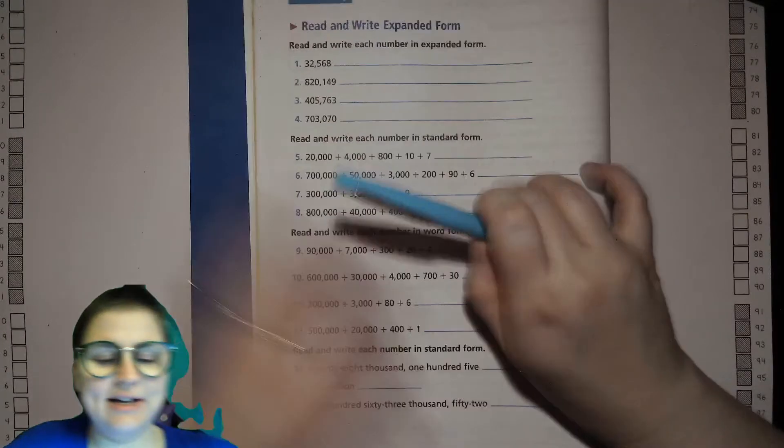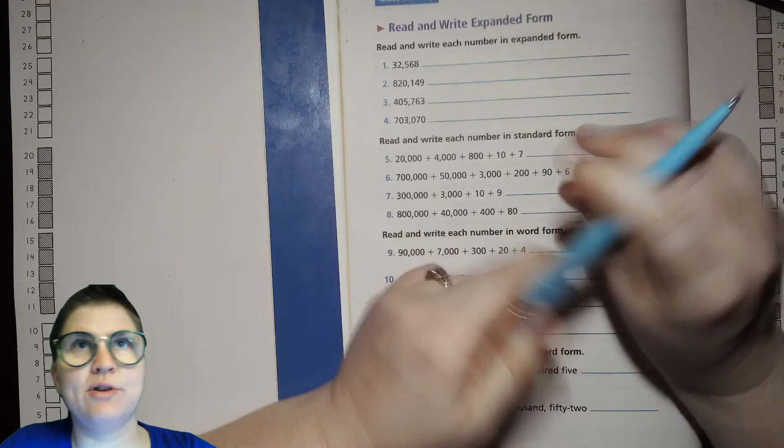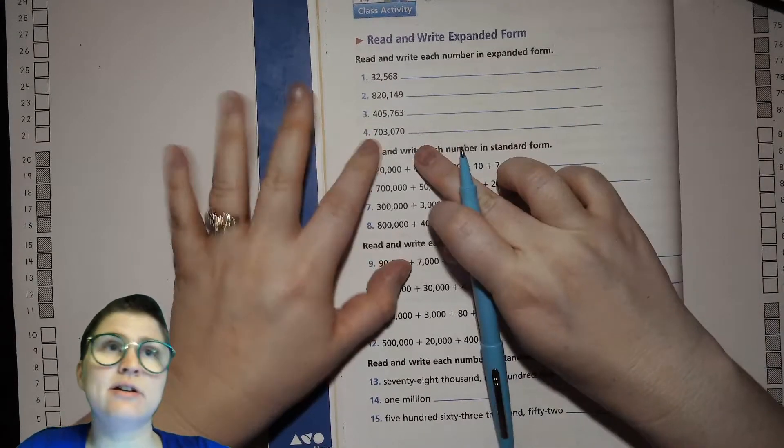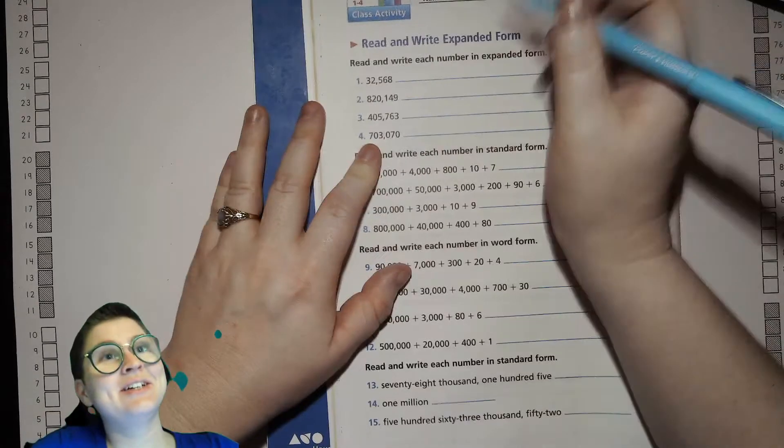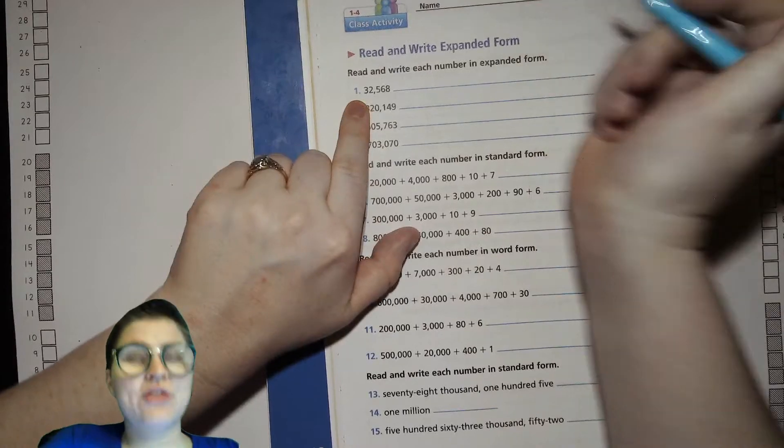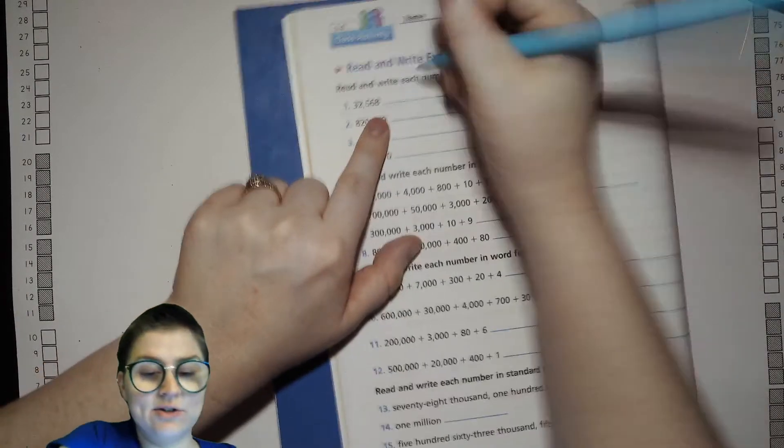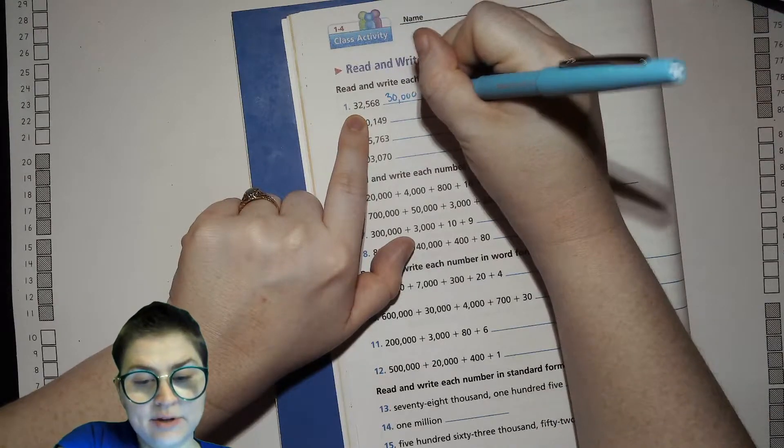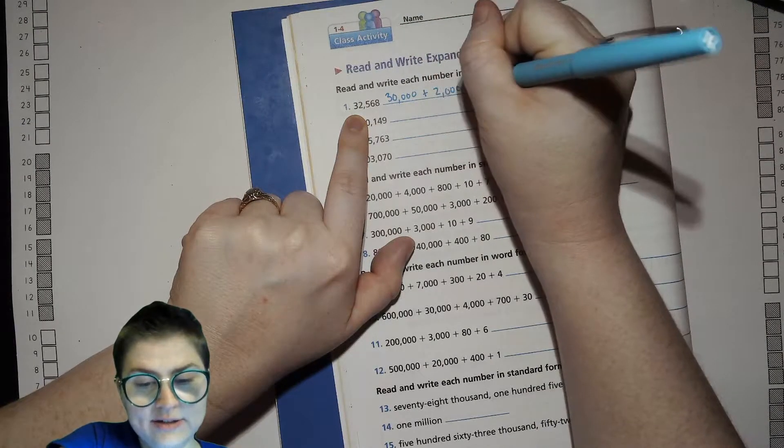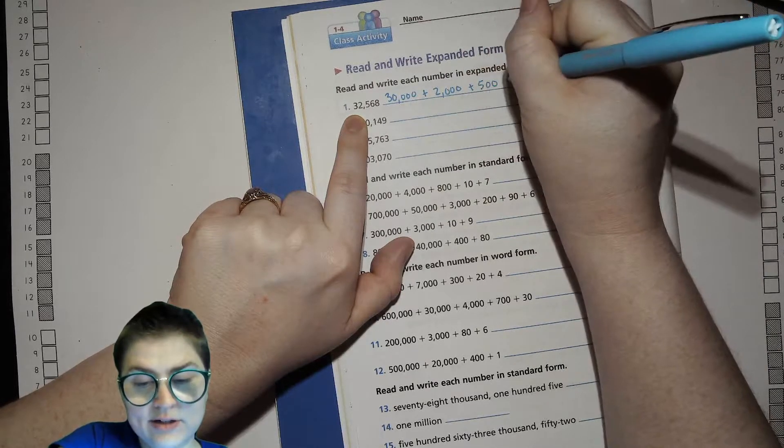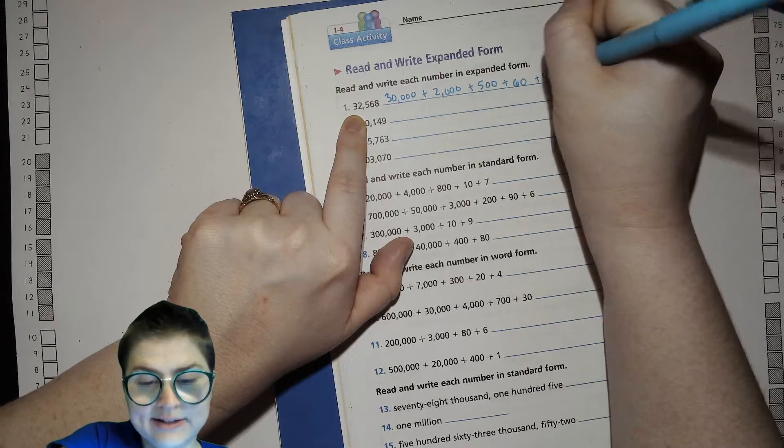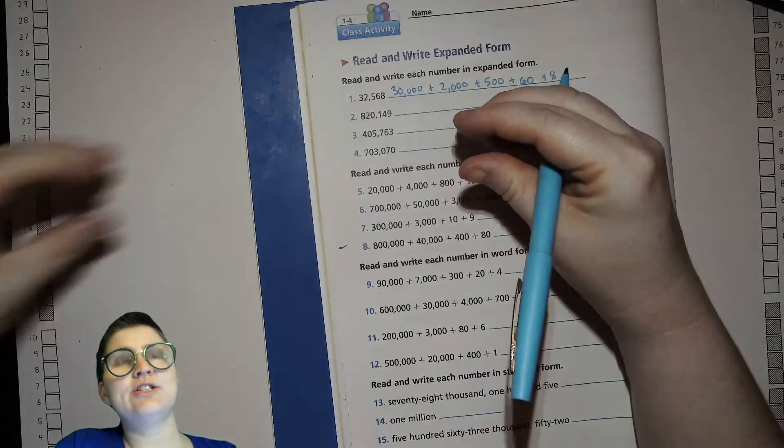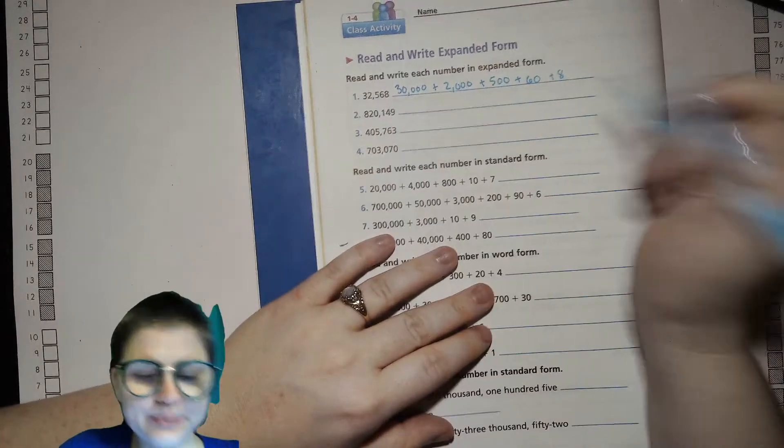Now we're going to go ahead and write these numbers out in expanded form. If you're normally the kind of person who has pretty large handwriting, you're going to probably have to write kind of small because we're dealing with hundreds, hundreds thousands. So 32,568. In the 10,000 place, 30,000 plus 2,000 plus 500 plus 60 plus 8. Remember, expanded form is if someone stretched out a number so each place value was by itself.